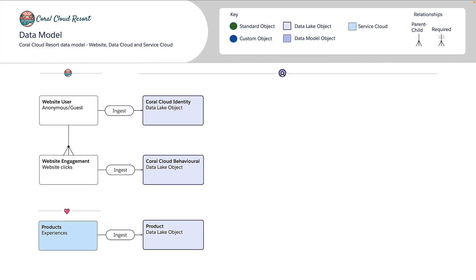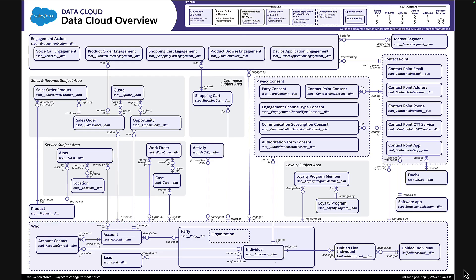In Data Cloud, that consistent schema is called the Customer 360 Data Model. Let's take a look at a key resource that's going to help us identify the best standard objects to use and discuss whether we need to create custom objects. This is the Data Cloud overview resource — it lists some of the standard objects that I can map into, but not all of them. I've included a link above if you need more information.